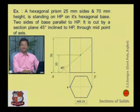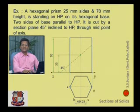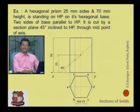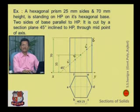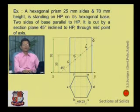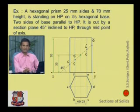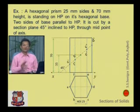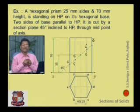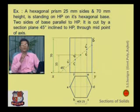Draw a line making 45 degrees with the XY line, passing through the midpoint of the axis at 35 mm height — this is the cutting plane. Name the six corner points of the hexagonal prism A, B, C, D, E, and F. From this prism draw vertical lines showing the edges; in the front view these are shown as dashed points — A dash, B dash, C dash, D dash, E dash, F dash. Mark the midpoint of the axis at 35 mm from the base and draw the cutting plane at 45 degrees with the XY line.